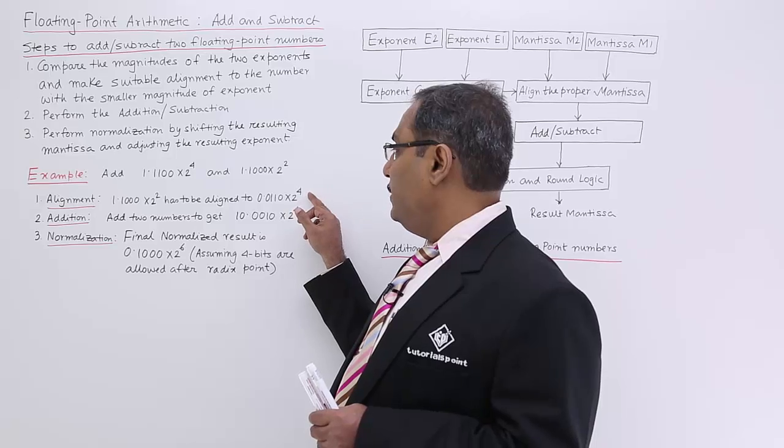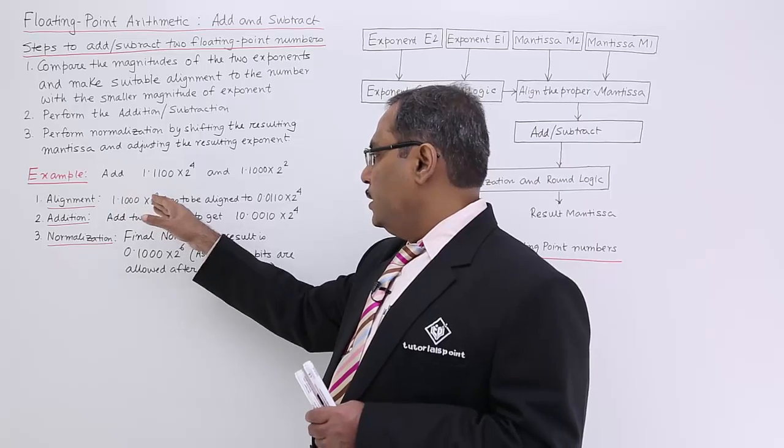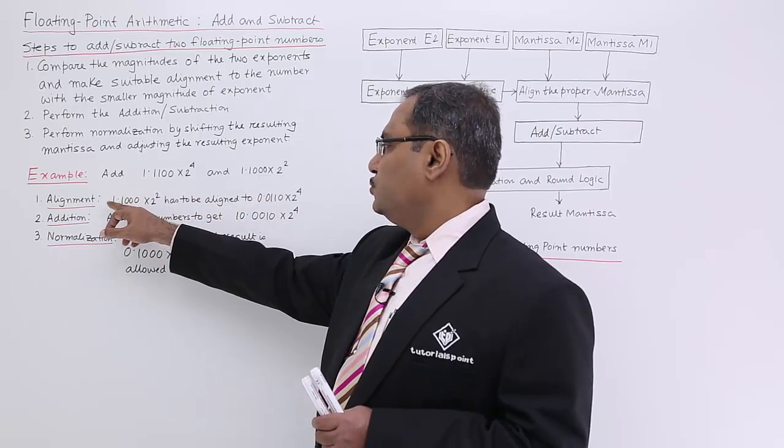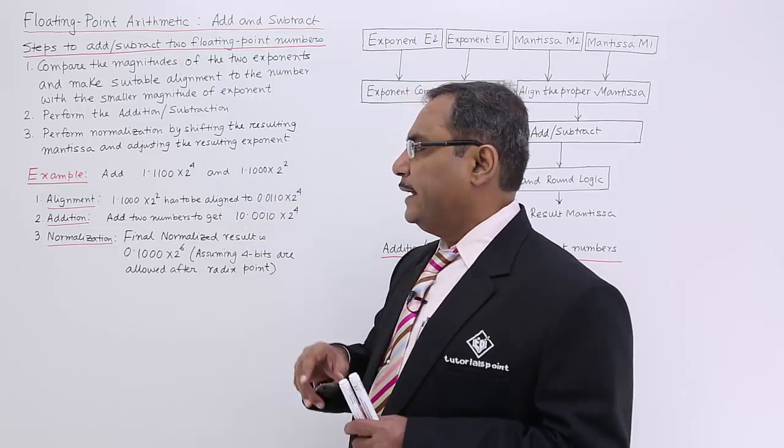As it is becoming 2 to the power of 4 in place of 2 to the power of 2, these two digits will be going after this decimal point. 0 1 will be going after this decimal point. The number will be aligned like this.